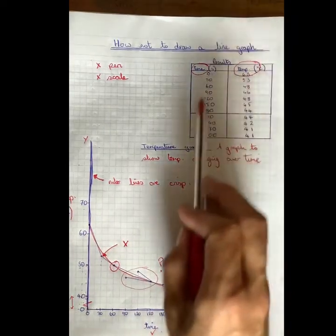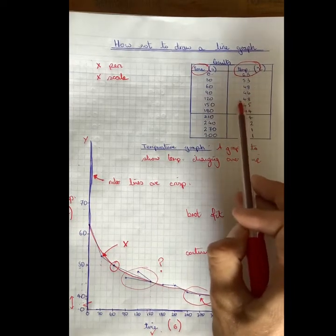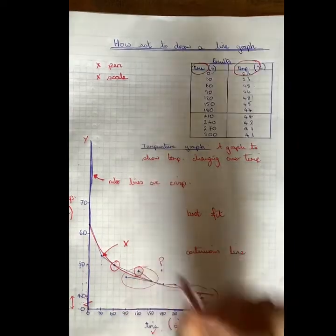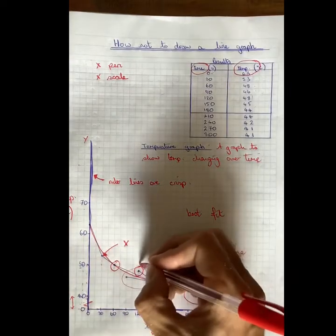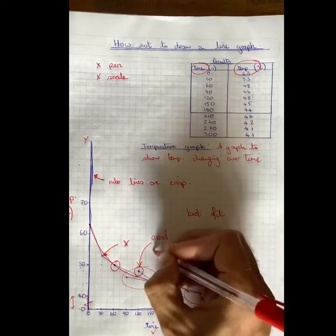There is an anomaly. If I bring you over to here, it's going down, down, down, down, down. 48, 46, 48. So at 120, we do have this result that does not quite work. So you can avoid the anomaly. We tend to call them outliers these days.